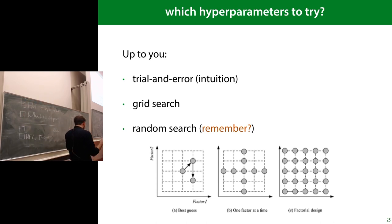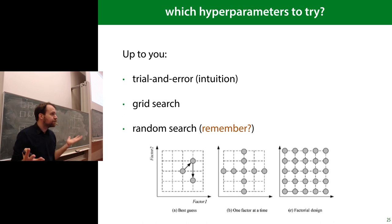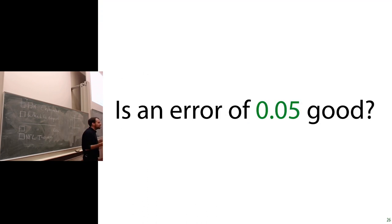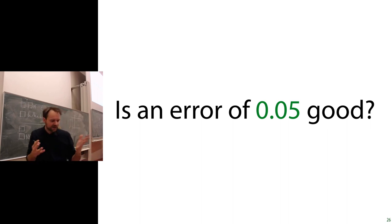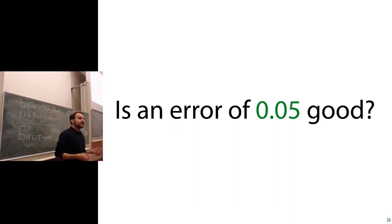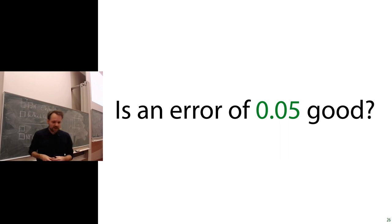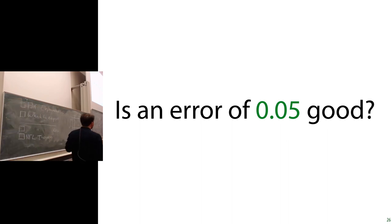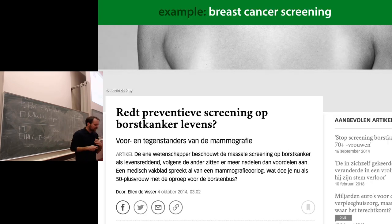That's how you find your hyperparameters and good model to train. Then you get some error value and have to ask: is it any good? If someone says they got an error of 0.05, should you be impressed? The answer is: it depends entirely on the problem — whether 0.05 error is good depends completely on what task you're doing.